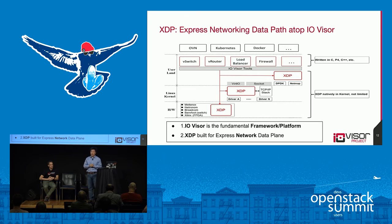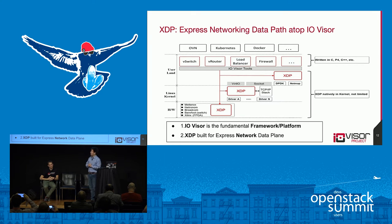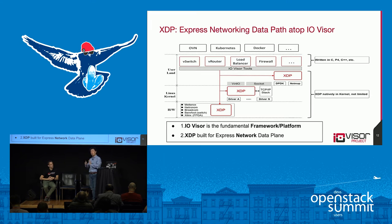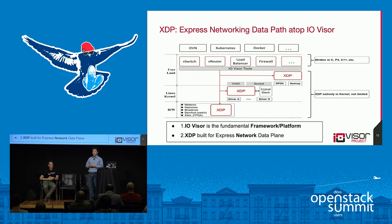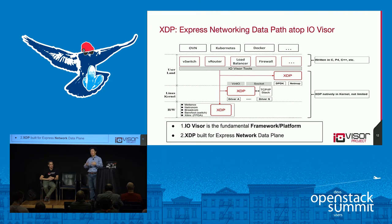There are three places to run XDP data plane. Looking from bottom up, we have hardware, kernel, and user space. XDP natively is implemented in the kernel — we'll show some demo and more detailed packet flow shortly. Use cases include virtual switch, vRouter, firewall, and load balancer. You can write those applications in C, P4, or other languages you prefer. In the demo, we'll also show how you can quickly update your program and load it to the VM.